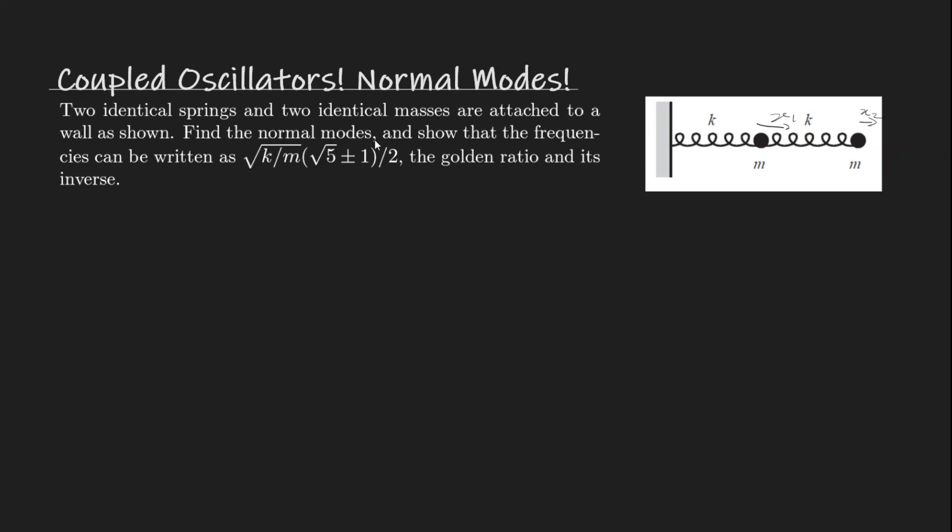Normal modes are basically when both the masses are oscillating at the same frequency and phase. And by phase it could still be like pi shifted. That means the amplitude is just negative and that's kind of how it's treated. And once you get the normal modes, all the oscillation is just a linear combination of the two.